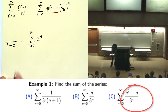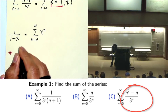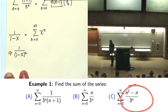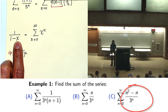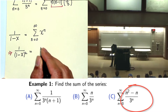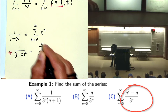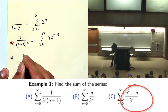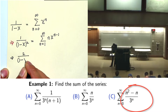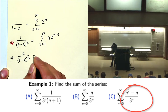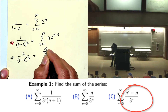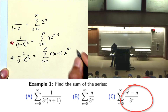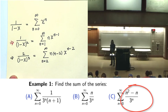If I differentiate one time, I get 1 over (1 minus x) squared on the left side, and n times x to the power n minus 1 on the right, with the series starting from n equal to 1. The second derivative gives 2 over (1 minus x) to the power 3 on the left side, and on the right: n times n minus 1 times x to the power n minus 2, with the series starting from n equal to 2.